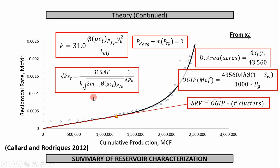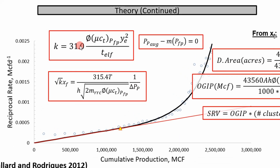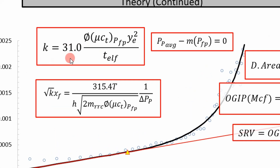It'll help you understand why I'm doing this. From the infinite acting region — the straight line — you're going to be able to get permeability, because all you need is the time to the end of linear flow. And then you have your fluid properties, porosity, and this Y_e is going to be your distance of investigation, which you'll see in the next slide and get a visual of.